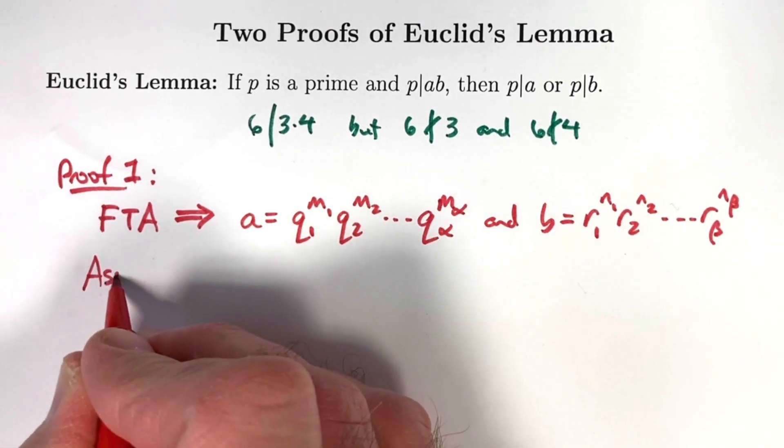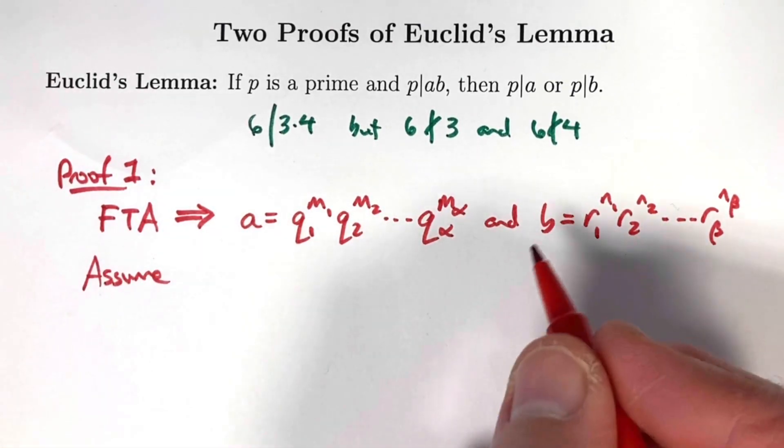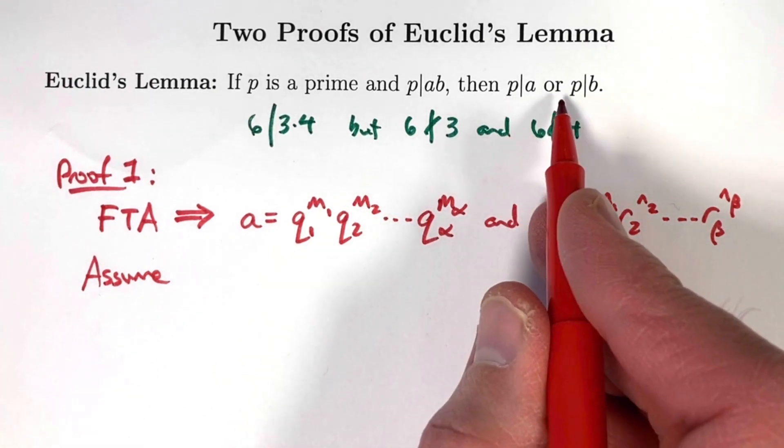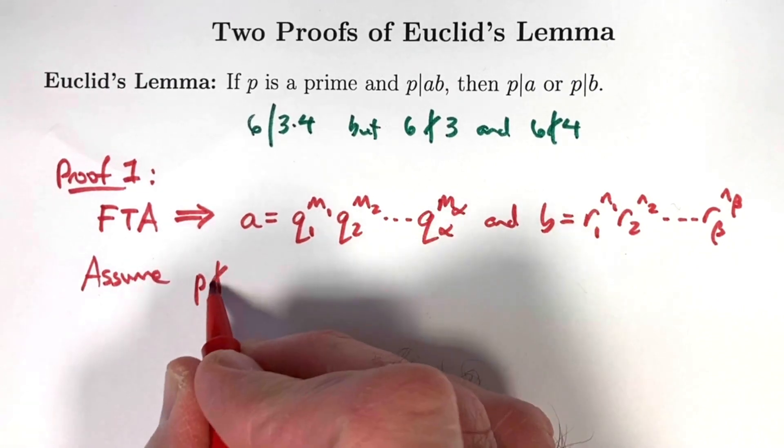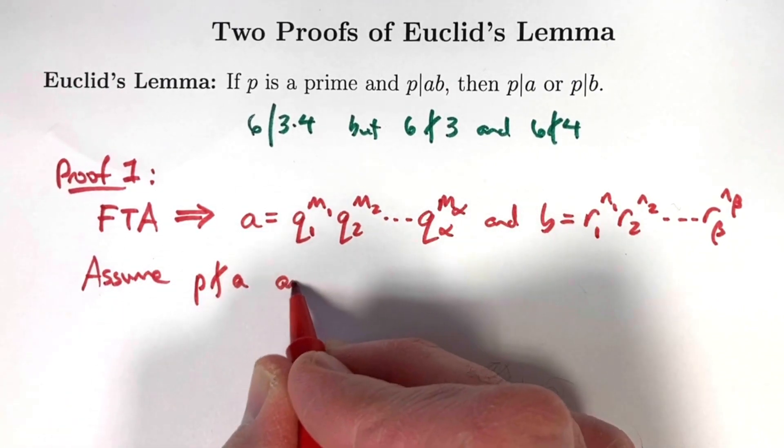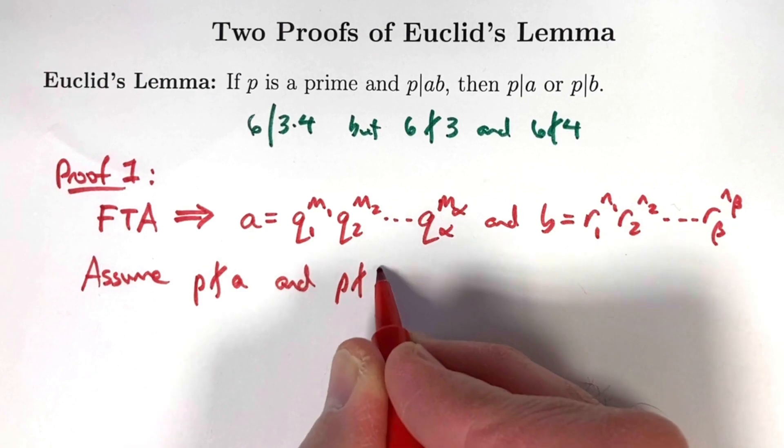Now assume, as I said before with the contrapositive here, that p does not divide a and p does not divide b. Assume p does not divide a and p does not divide b.